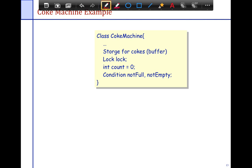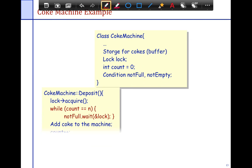And so let's take a look at the specific class definition. So first thing is we have a class CokeMachine. We have storage for the coke. We have a lock that protects the coke machine. We have a count that counts how many coke machines we actually have. And then we have two conditional variables, notFull, notEmpty.